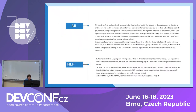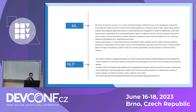Before diving into NLP, let me give you the basics of machine learning, because NLP uses machine learning extensively. Machine learning is all about having your systems make decisions for you without explicitly programming it. We have two categories: supervised and unsupervised. Supervised is when we use it with labeled data, and unsupervised is where there is no label for the data.